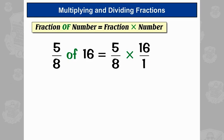Now we can times these as normal. We can do a bit of cancelling down — 8 and 16 both divide by 8. Then we times our tops: 5 times 2 is 10. And on the bottom, 1 times 1 is 1. So 10 over 1 is just 10.